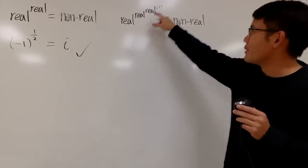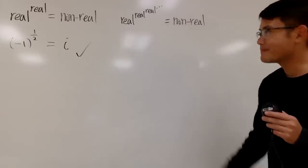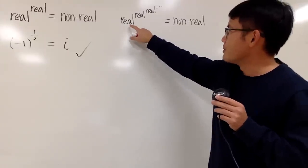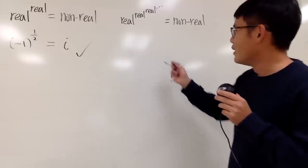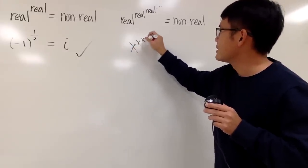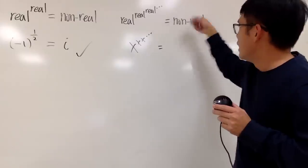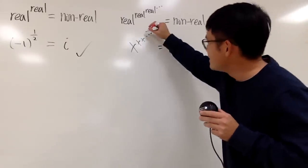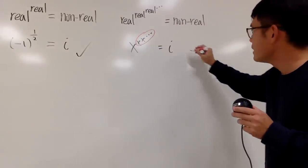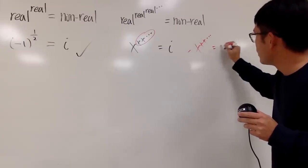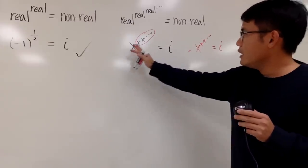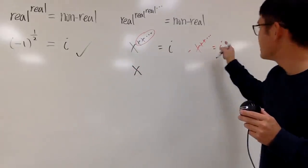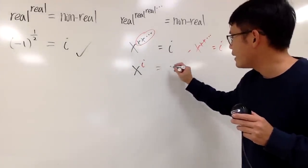Now for question two: a real number to a real number power infinitely many times, ending up with a non-real result. I'll solve this by assuming all the real numbers are the same for simplicity. So I want to solve x to the x to the x, on and on forever, and make this equal to a non-real number — let's try to make it equal to i. Since x to the x to the x infinitely many times also equals i, the inner part is also i, so we need x to the i power equals i.